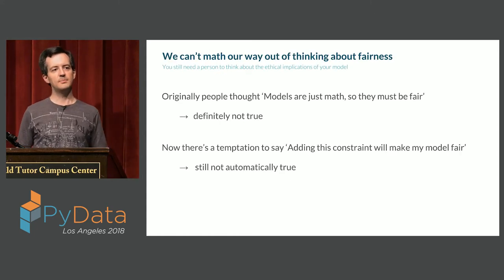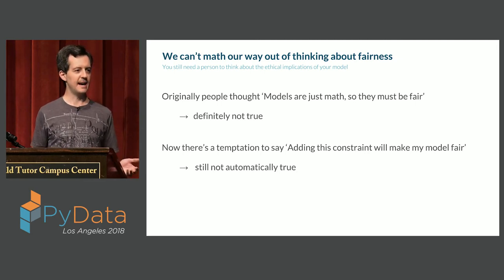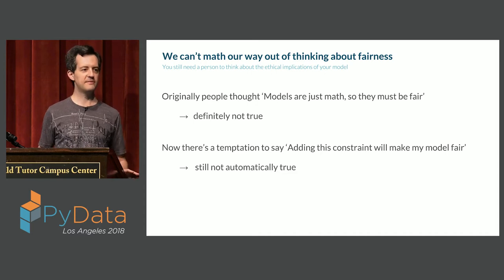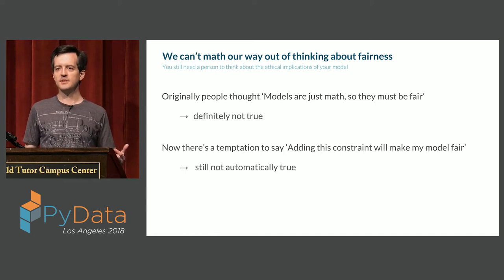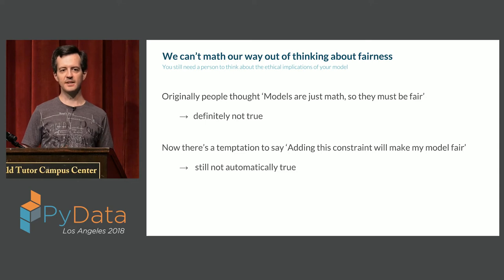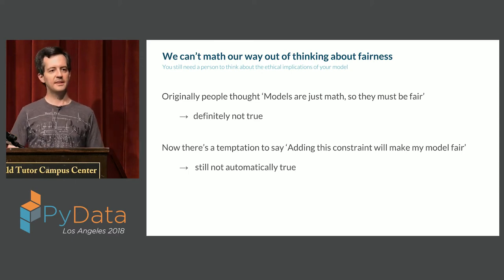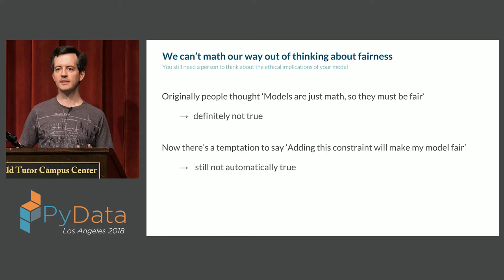I think when models first started being used at scale in public, people had the idea that models are math and math doesn't care who you are — it doesn't care about protected classes. So as long as we use models to make predictions, everything will be fair and we're taking bias out of the process. People have now come to the realization that this isn't the case. There's now a push to fix this — you can fix it by looking at different fairness metrics, modifying the training process, or encoding your ethics into your loss function. But you still have issues in adding constraints to your models; you can't just pick one constraint off the shelf and have everything automatically taken care of.